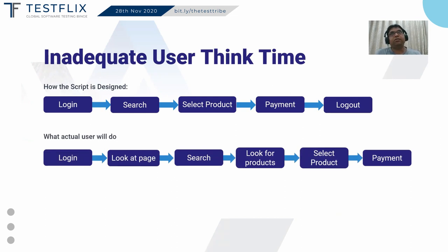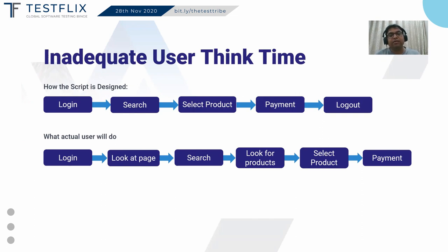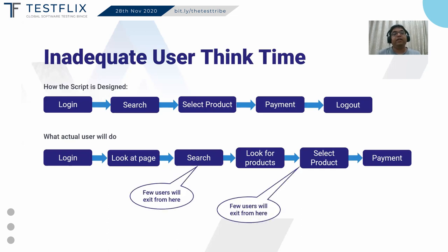What happens in reality is: a user will go to the website, login, then look at the page, look at offers or what's on the page, read something, then go to search and enter a search query. Once search results appear, the user will look at the results, scroll down, go through the pagination, select a product, enter bank details and address, and then do the payment. So between all these transactions there are some delays — we call it think time. Even while doing that, some users will drop off.